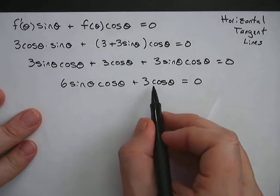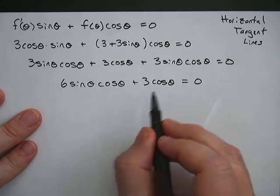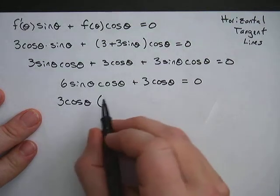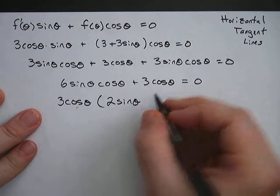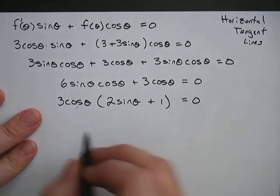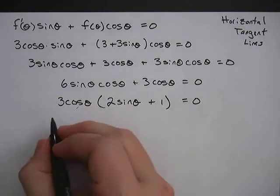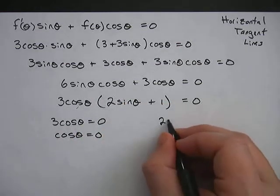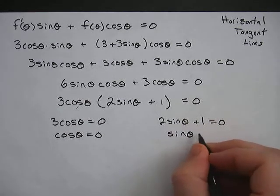Notice that we have 3 sine cosine and 3 sine cosine, so those combine to give us 6 sine theta cosine theta, plus 3 cosine theta equals 0. Now I'm going to factor. I can factor a 3 out because 3 goes into both terms, and I can also factor a cosine because both terms have a cosine. So factoring out 3 cosine theta gives 3 cosine theta times (2 sine theta plus 1) equals 0. Setting each factor to zero: cosine theta equals 0, and 2 sine theta plus 1 equals 0, so sine theta equals negative 1/2.